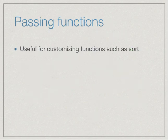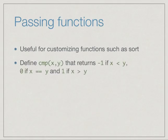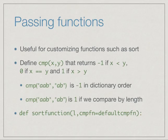One practical use of this is to customize functions such as sort. Sometimes we need to sort values based on different criteria. We might have an abstract compare function which returns -1 if the first argument is smaller, 0 if the two arguments are equal, and +1 if the first argument is bigger than the second.